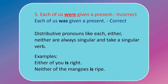Each of us were given a present — this is incorrect. Distributive pronouns like 'each,' 'either,' and 'neither' are always singular and take a singular verb. So the correct sentence is: each of us was given a present. Either of you is right. Neither of the mangoes is ripe.